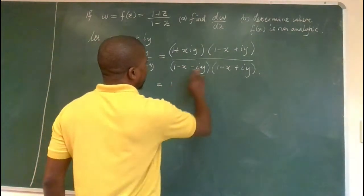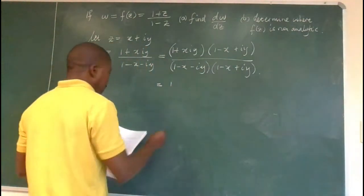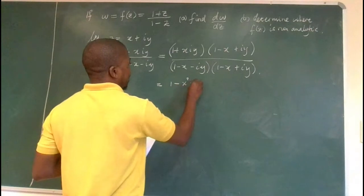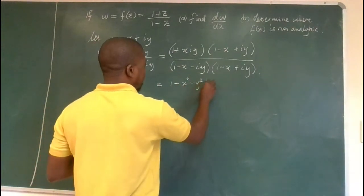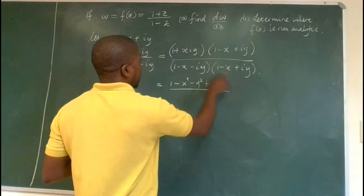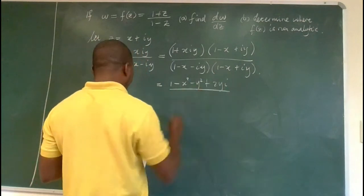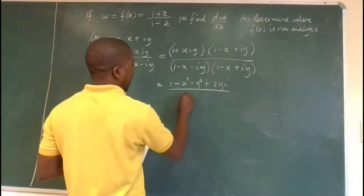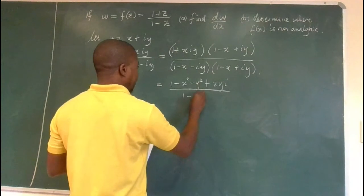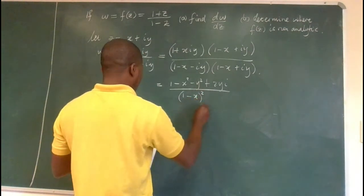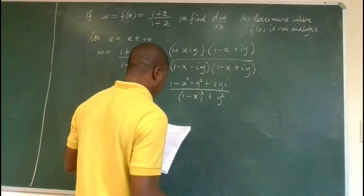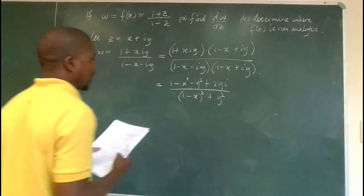Removing the brackets, the numerator gives us (1 − x² − y²) plus 2yi, and the denominator becomes (1 − x)² + y².